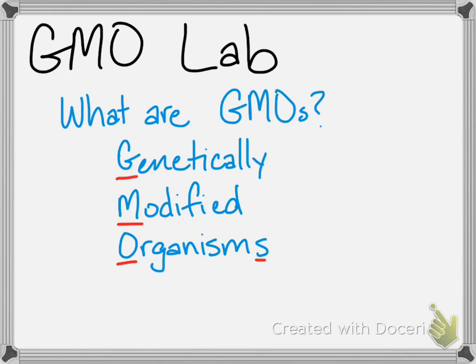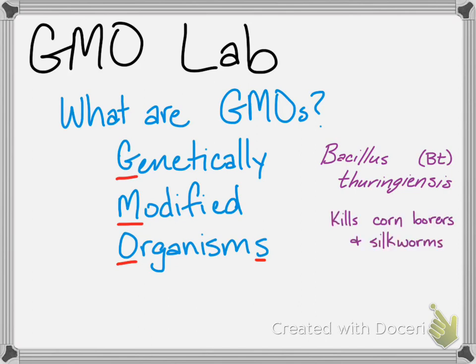Any genetically modified organism is an organism that has been modified — it has had genes added to it, generally from another organism. In our case, we're going to be looking at genetically modified plants. We're looking at a gene from Bacillus thuringiensis — we call it BT for short. That gene from that bacteria kills corn borers and silkworms, so it's a great gene you can add to plants to act as a pesticide without having to spray pesticides from a plane all over a field, which can get into the food chain and become magnified.